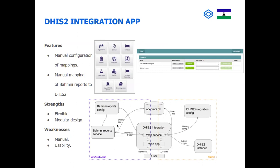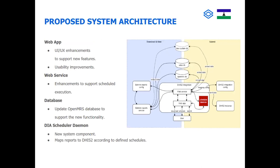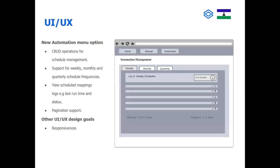We are going to modify the DHIS2 Integration App to address our problem. Under our design, the main component we contributed is a scheduler daemon onto the existing Bahmni DHIS2 Integration App, as shown in the proposed system architecture diagram. Its main function is to automate the mapping of Bahmni reports — whether OpenMRS, pharmacy, or lab information system — to DHIS2 according to user-defined schedules. Several additional web application, web service, and database enhancements were also made to support the required functionality.